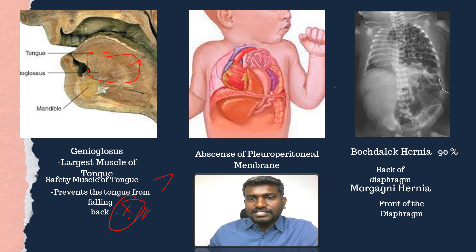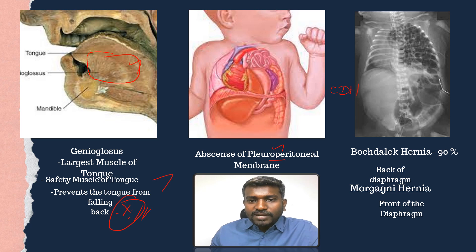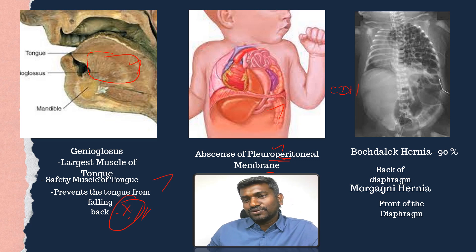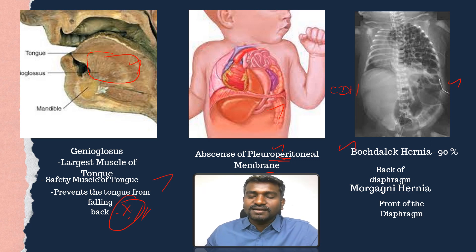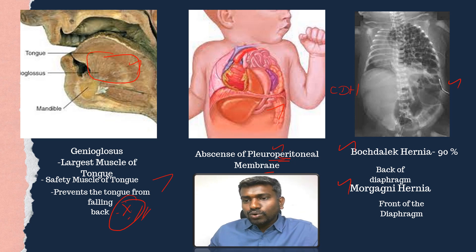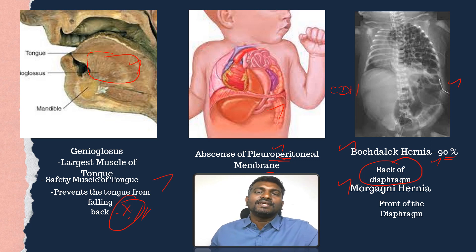This image shows CDH — congenital diaphragmatic hernia. It is due to absence of the pleuroperitoneal membrane. It is classified into two types: Bochdalek hernia, which is the most common at about 90% and is located at the back of the diaphragm, and Morgagni hernia, which is a hole at the front of the diaphragm.